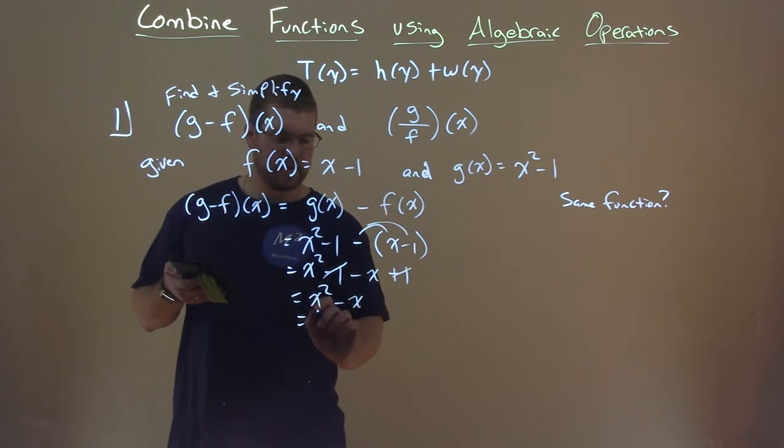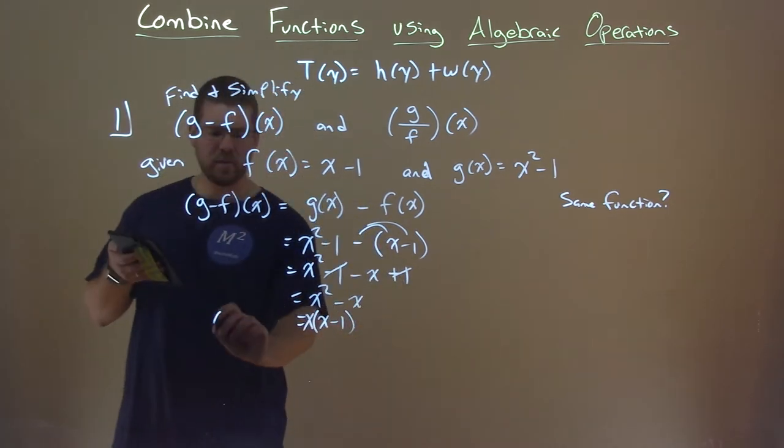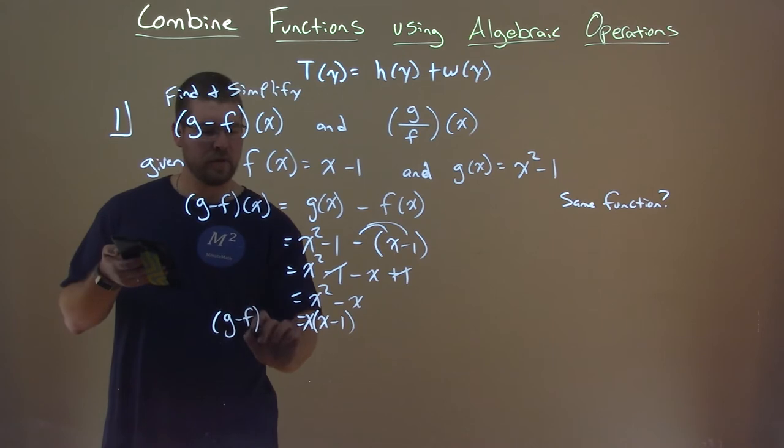And if we want to factor that out, it can be x minus one, and you put an x out front there, right? And that's equal to our g minus f of x.